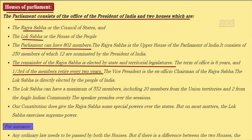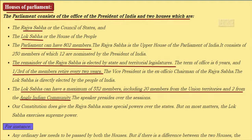Lok Sabha is directly elected by the people of India. Lok Sabha can have a maximum of 552 members, including 20 members from the Union territories and 2 from the Anglo-Indian communities. The Speaker presides over the sessions of Lok Sabha. The Constitution does give the Rajya Sabha special powers over the states, but on most matters, the Lok Sabha exercises the supreme power.